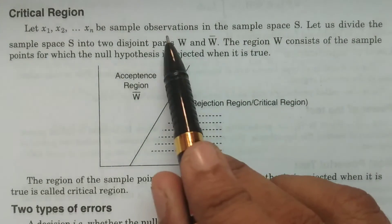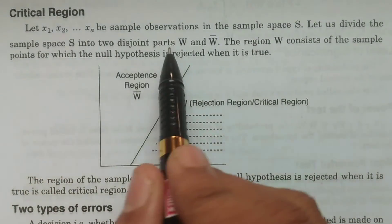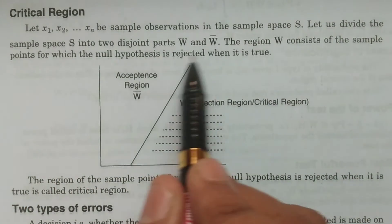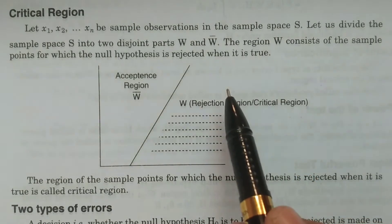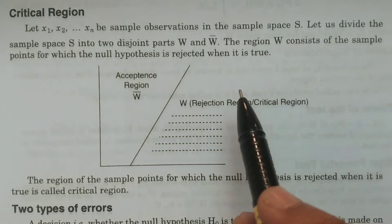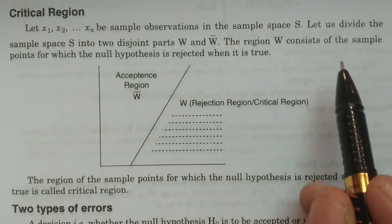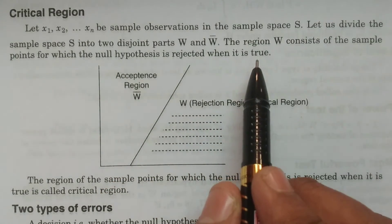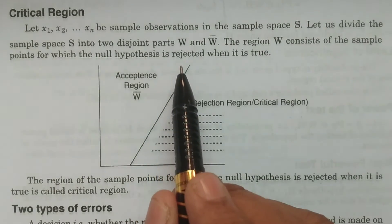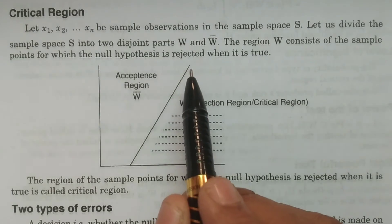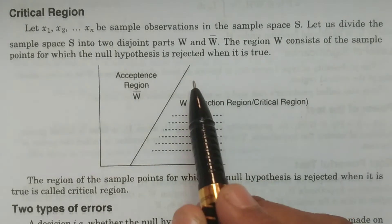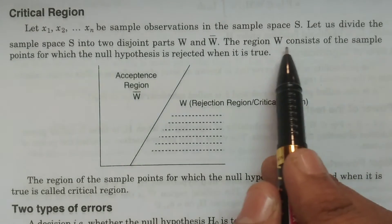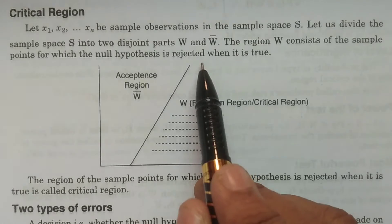We consider the sample space S and divide it into two disjoint parts W and W complement. The region W consists of the sample points for which the null hypothesis is rejected when it is true. When the null hypothesis is rejected even though it is true, the sample points — the information obtained from the sample — are placed in this region. W consists of sample points for which the null hypothesis is rejected when it is true.